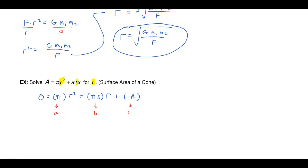And then all I have to do is plug that into the quadratic formula so that my r is going to be a negative b plus or minus the square root of b squared. We'll have to square the pi s minus 4, A is pi, a is pi, c is negative A and then divide all that by 2a and the a value is pi.